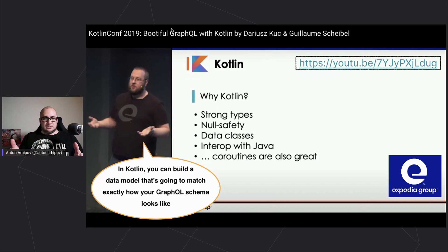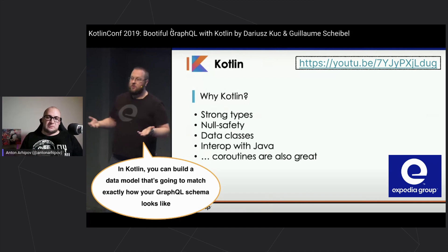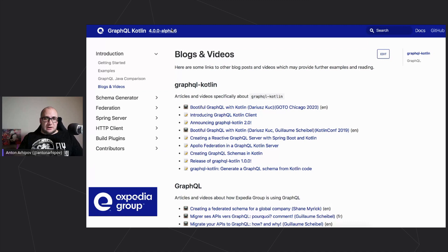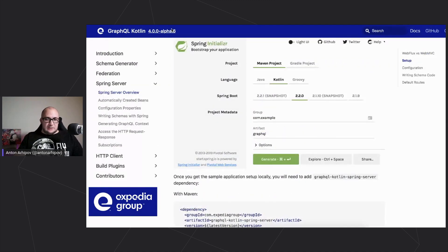They did not decompose their legacy service before introducing Kotlin. They started by introducing Kotlin data classes into the existing Java application and then gradually converting existing Java code wherever it was reasonable. The video is available on our channel. They also published the GraphQL library for Kotlin with a GitHub repository and documentation. Since they use Spring Boot, they also created a starter that conveniently configures this library in your Spring project.